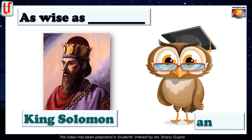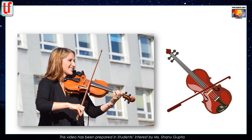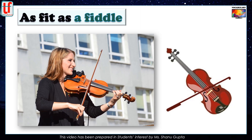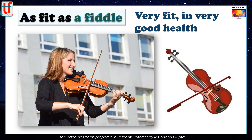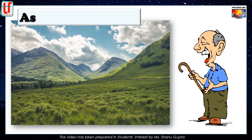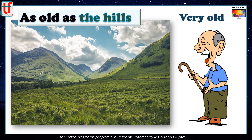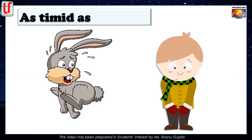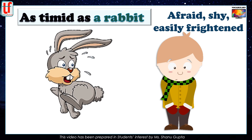As wise as King Solomon, or as wise as an owl — both these similes mean very wise. As fit as a fiddle. A fiddle is another term for violin, a musical instrument. Nowadays the simile simply means very fit or in very good health. Like I can say, despite being in her 80s, my grandmother is as fit as a fiddle. As old as the hills — hills have been standing for thousands of years, so this simile means very old. As timid as a rabbit, or as frightened as a rabbit — it means afraid, shy, easily frightened. The little boy is as timid as a rabbit, especially in the presence of strangers.